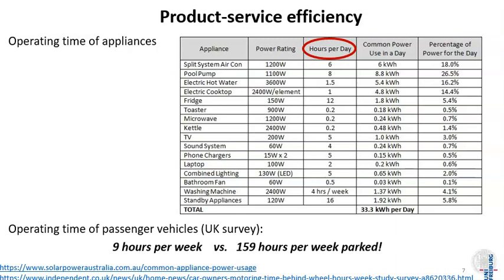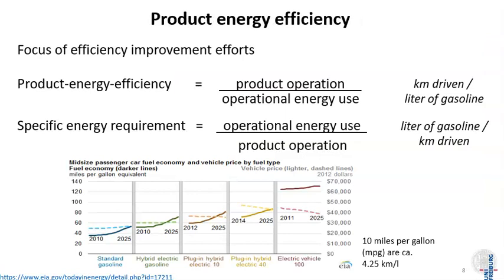Moving on to the second topic: product energy efficiency. Product energy efficiency is defined as the product operation possible with a certain energy input, divided by that energy input. A typical example would be kilometers driven per liter of gasoline. Usually we take the inverse — the specific energy requirement: the operational energy needed divided by the desired product operation — because the product operation is fixed. If I want to drive my car from here to the office, I can use the specific energy requirement to calculate how much energy or gasoline I need.